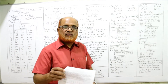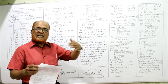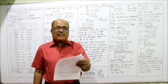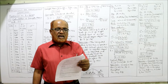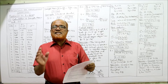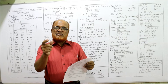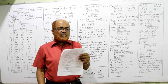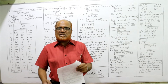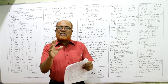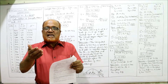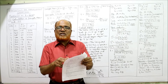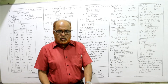Problem 12 will be done in the next video as it is a lengthy problem. Now Problem 13: the mean life of a sample of 10 electric bulbs was found to be 1456 hours with a standard deviation of 423 hours. A second sample of 17 bulbs chosen from a different batch had a mean of 1280 hours and standard deviation of 398 hours. Is there a significant difference in the mean life of the two batches?